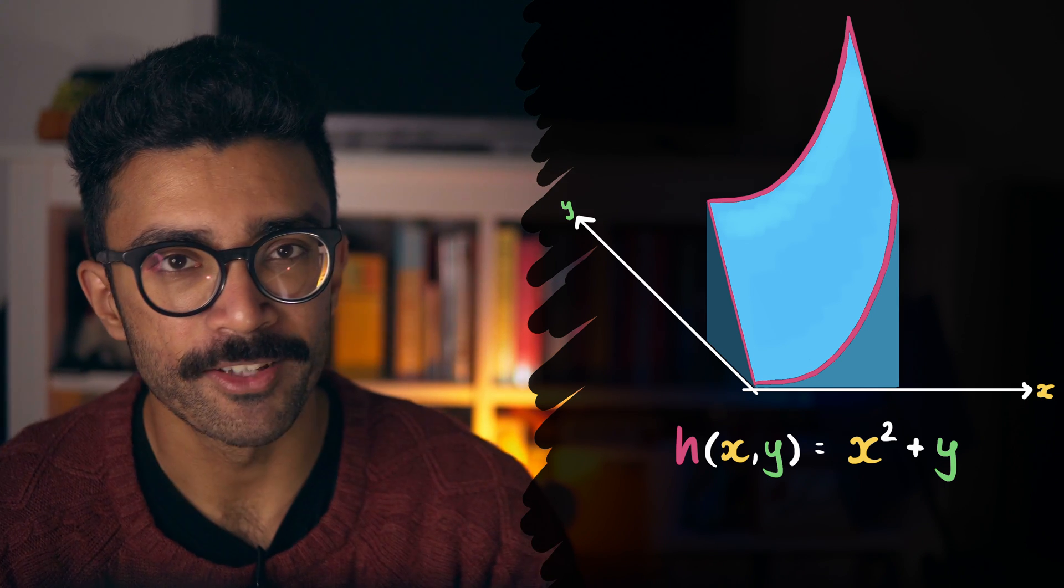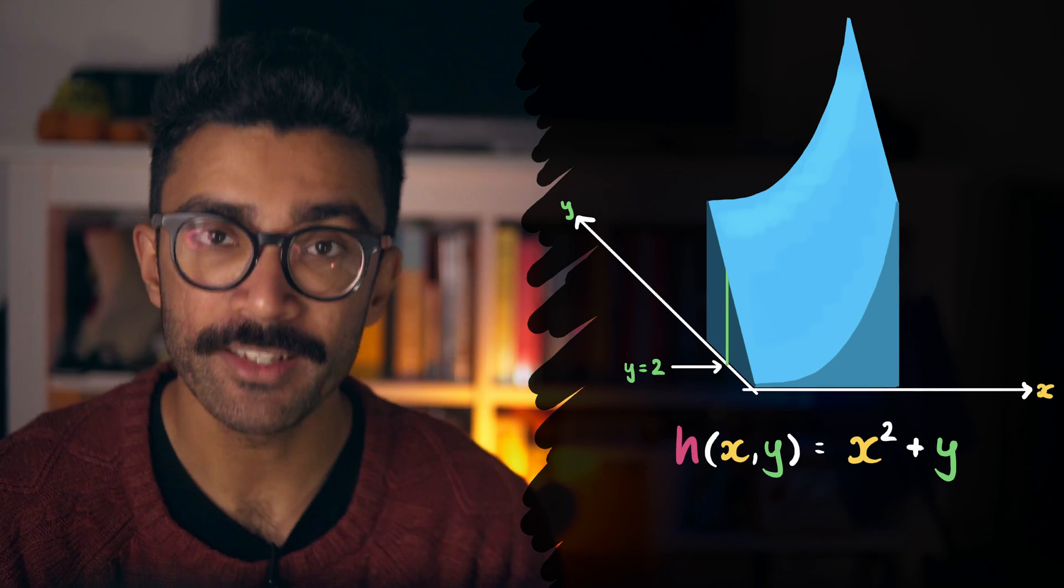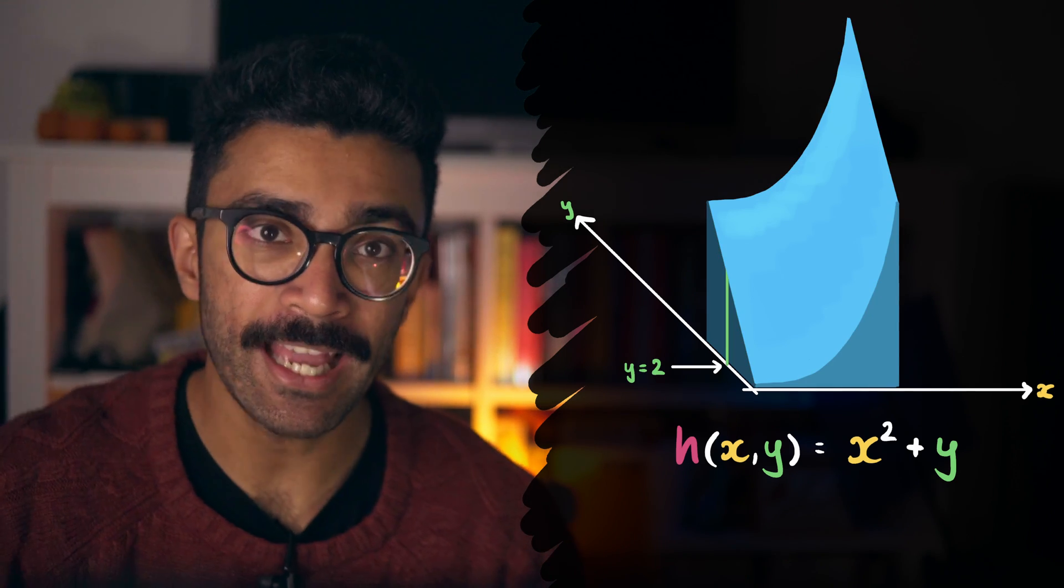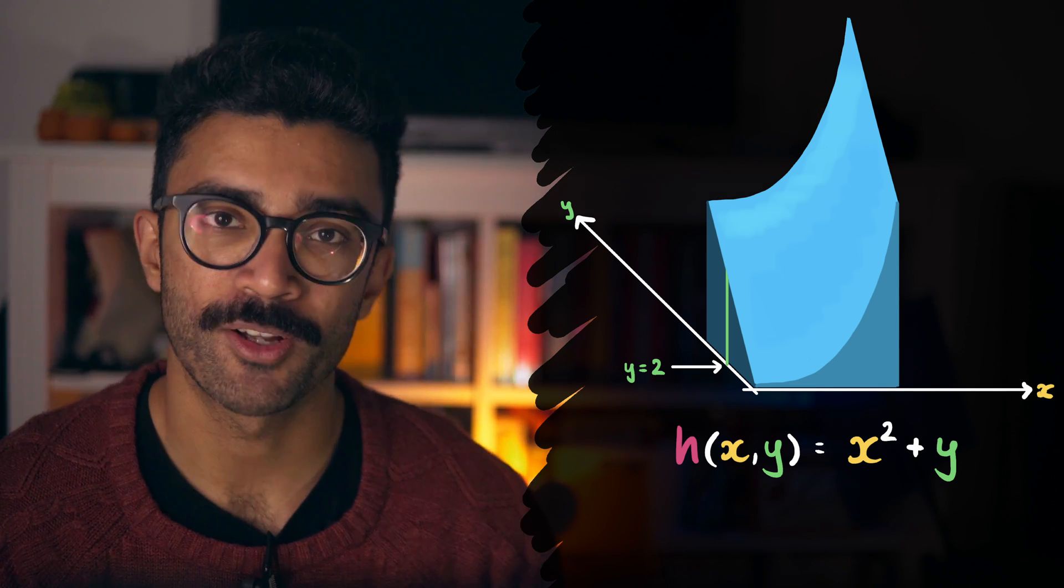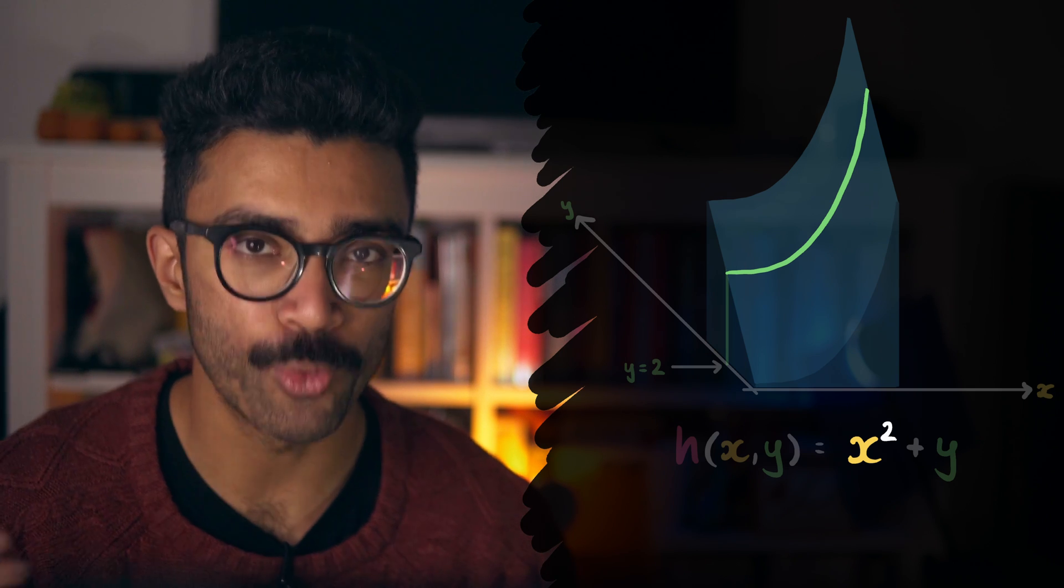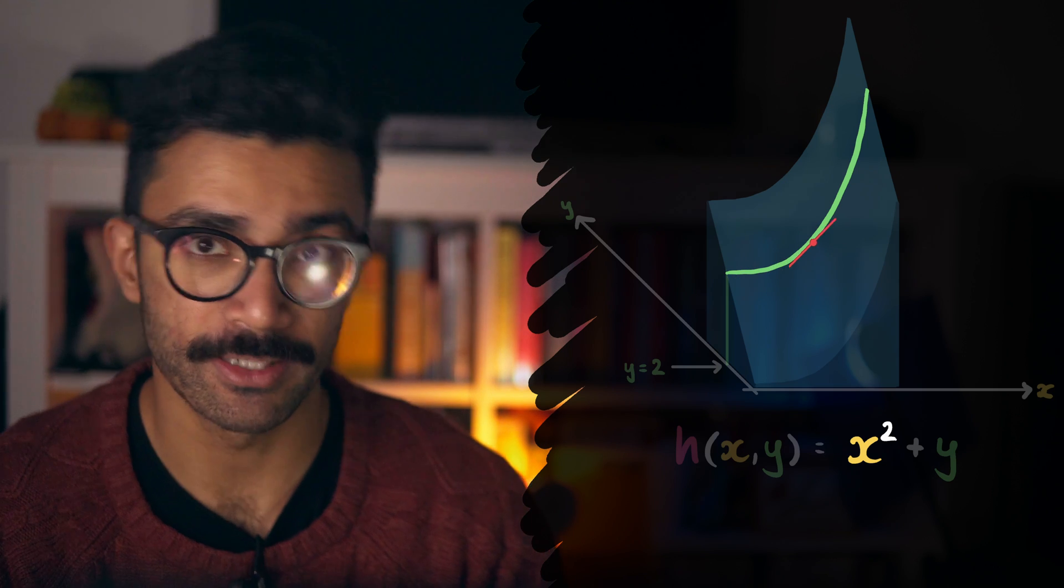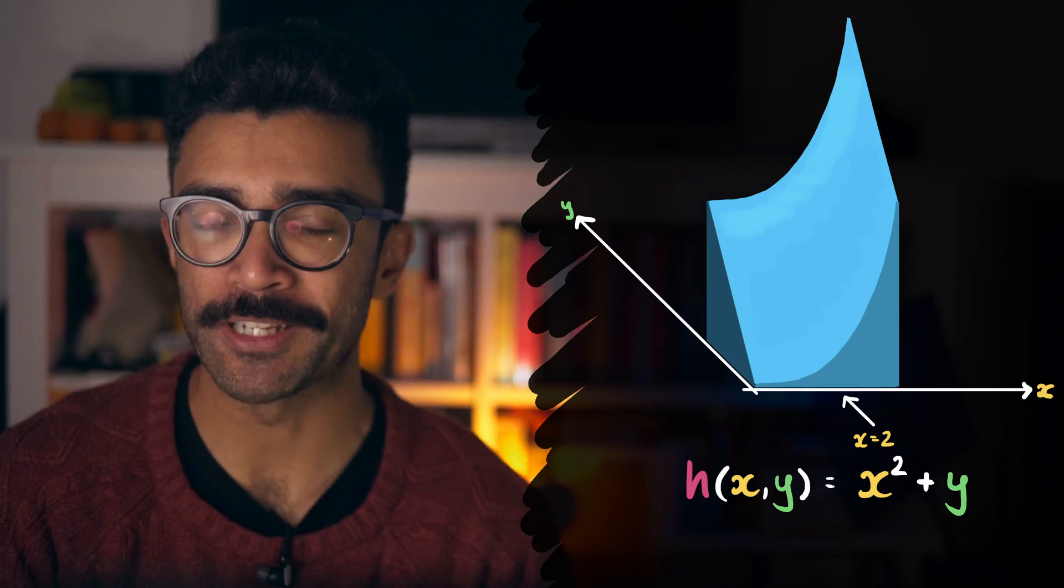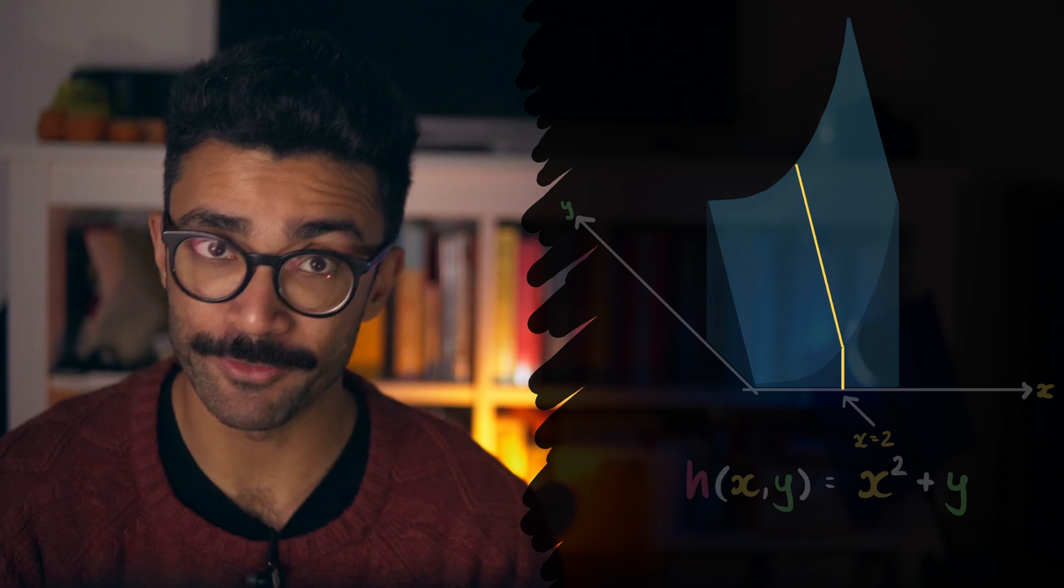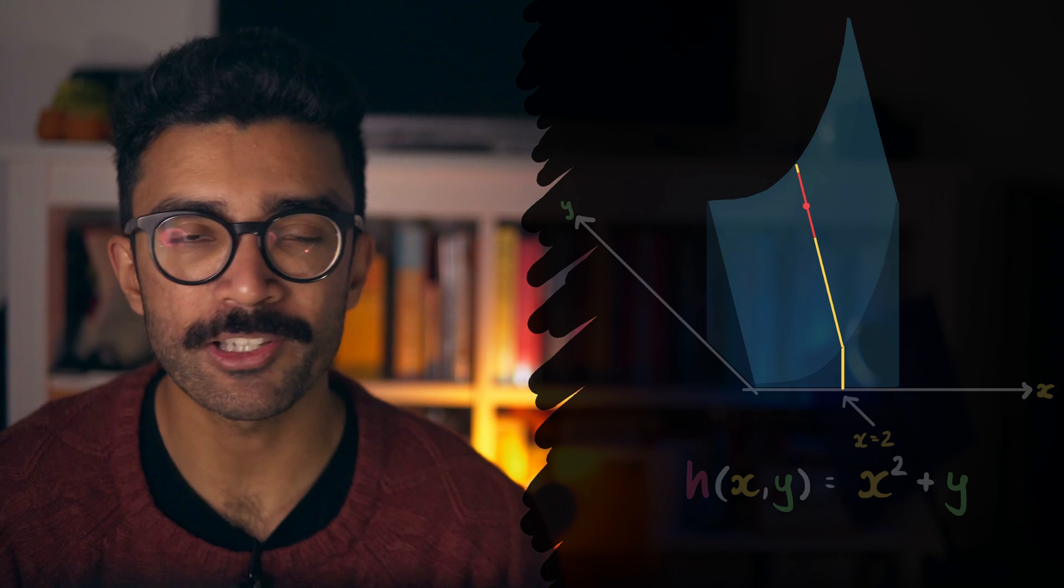The key thing to take away here though is that if we pick a random value of y, then study how moving along the x direction affects the height of the surface, we see that the height changes quadratically, like an x squared curve. It starts out flat, then becomes steeper and steeper and steeper. Similarly, if we chose a particular value of x and moved along the y direction, at this value of x, then the height increases linearly, with a constant slope or gradient.